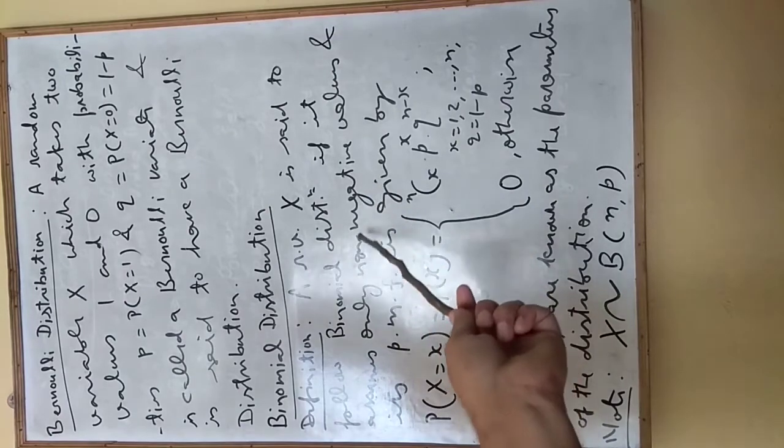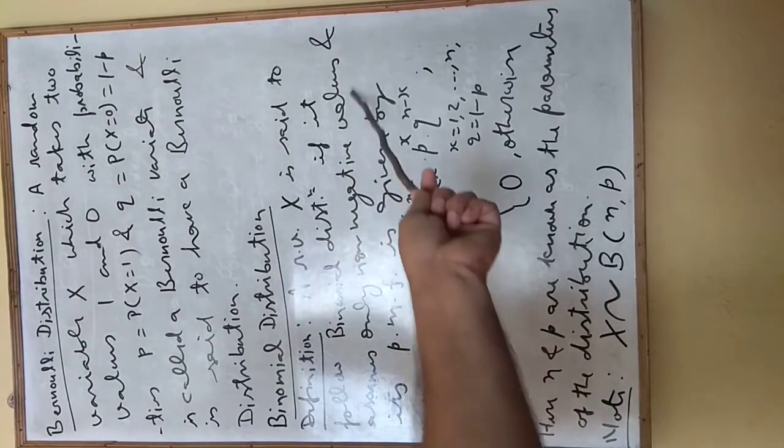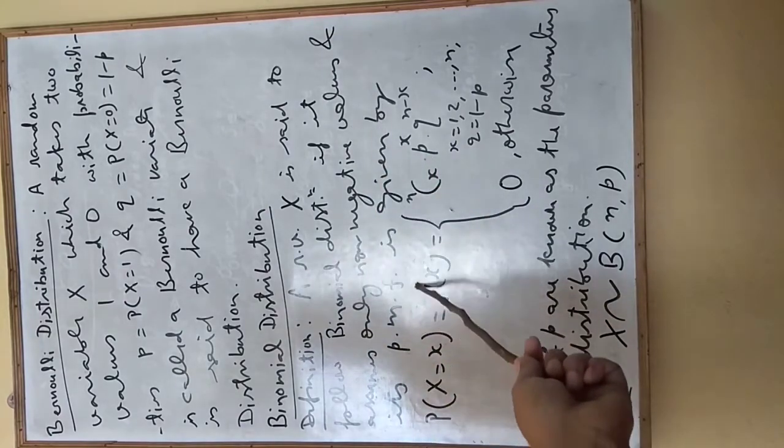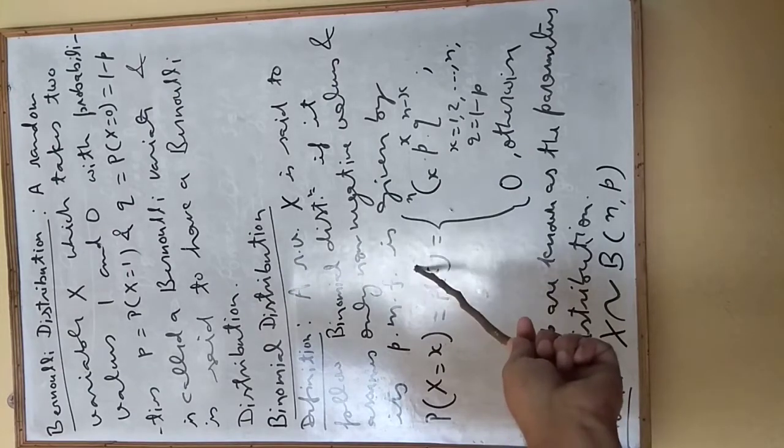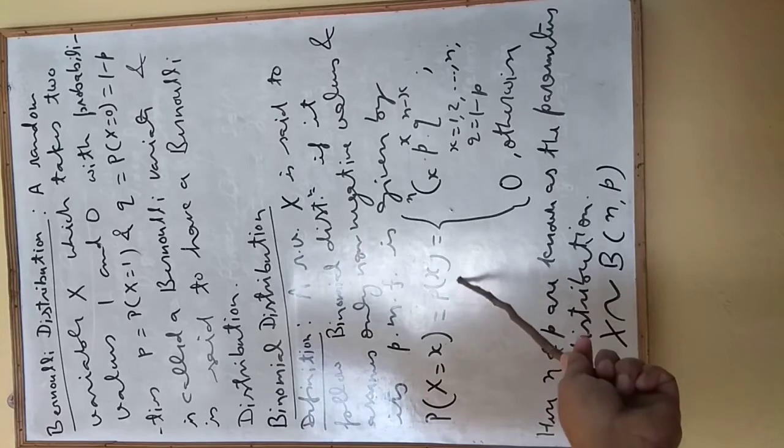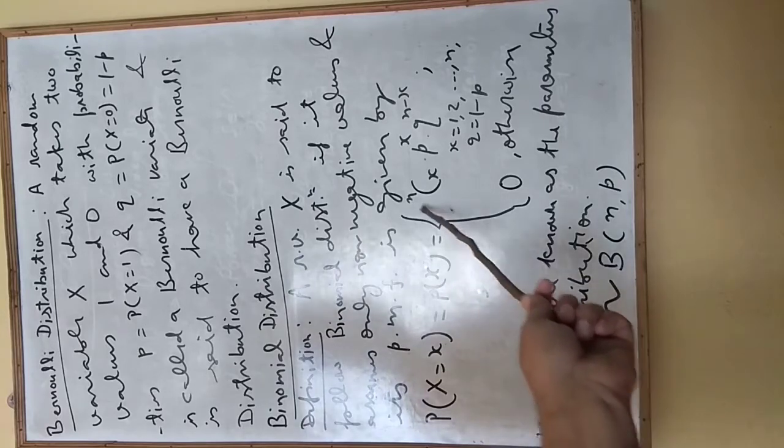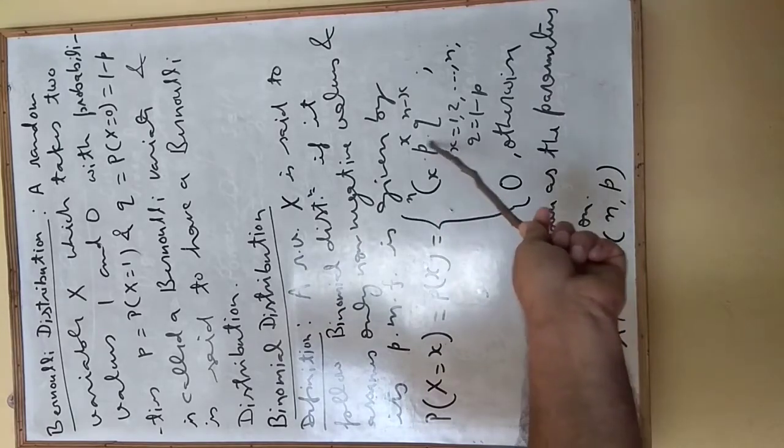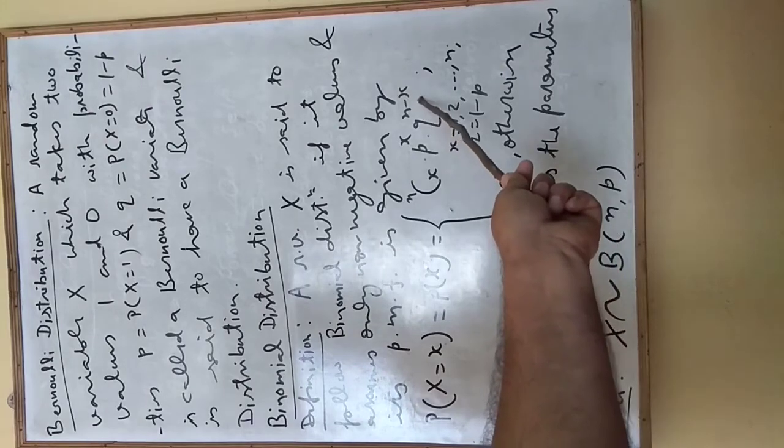Since probability is non-negative, if it assumes only non-negative values, its probability mass function is given by P(X=x). This means p(x) is given as nCx times p to the power x times q to the power n minus x.